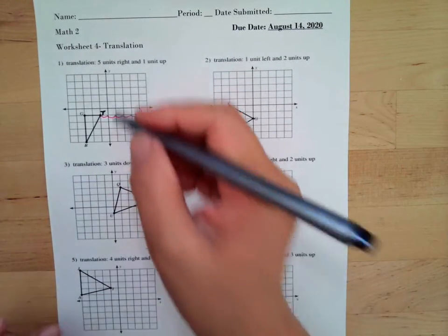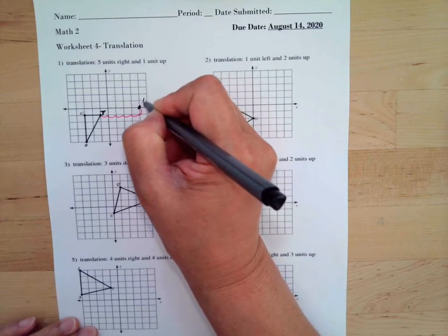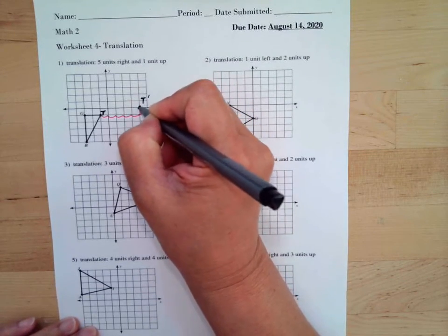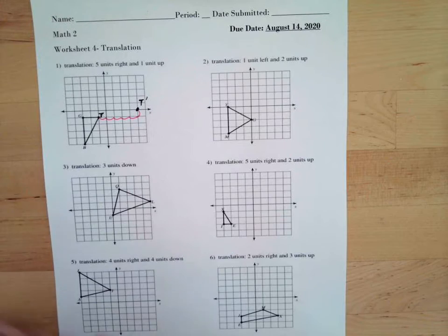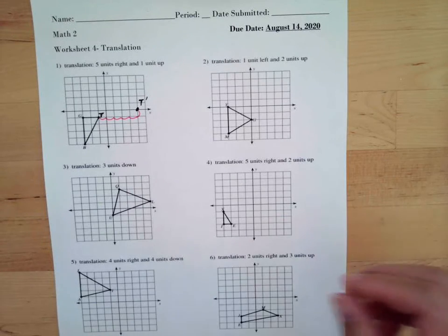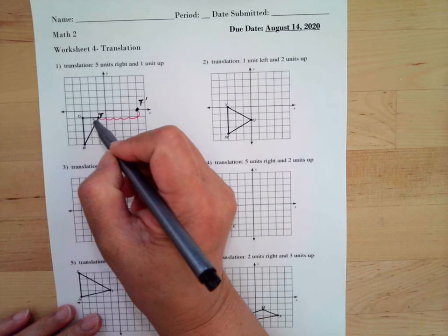...new letter T, the location T prime, will be in this position. Then let's do a letter G. So five...